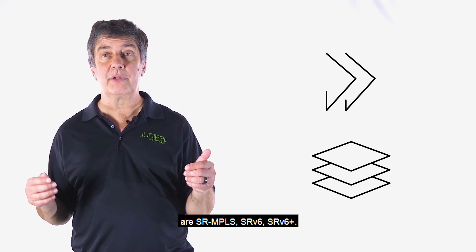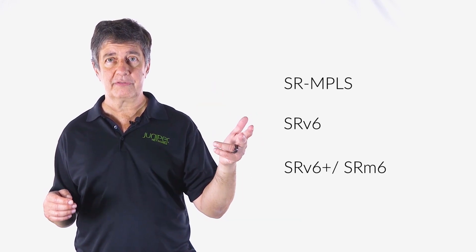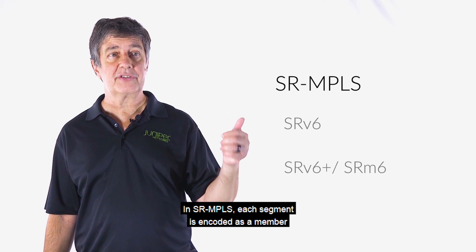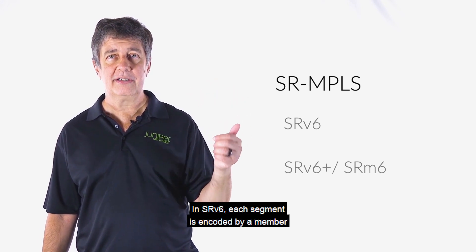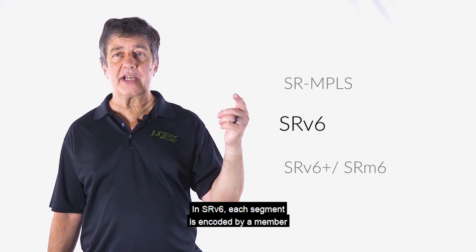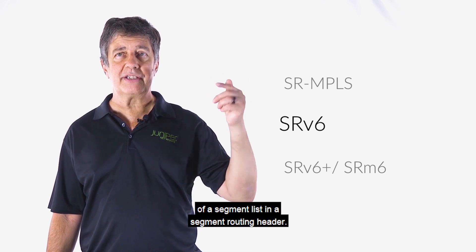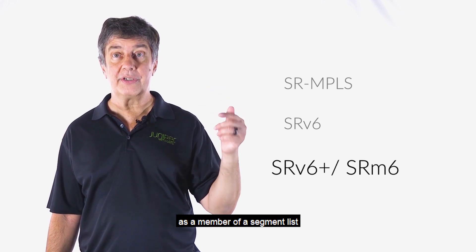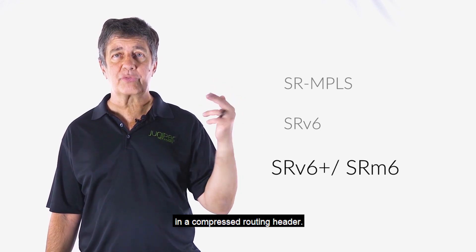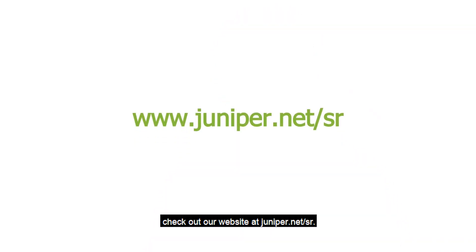In summary, the three forwarding planes are SR-MPLS, SRv6, and SRv6+. In SR-MPLS, each segment is encoded as a member of an MPLS label stack. In SRv6, each segment is encoded as a member of a segment list in a segment routing header. In SRv6+, every segment is encoded as a member of a segment list in a compressed routing header. Thank you for watching, and for more information, check out our website at juniper.net/SR.